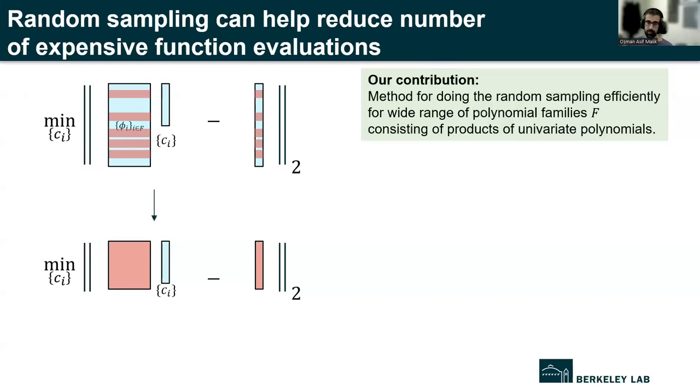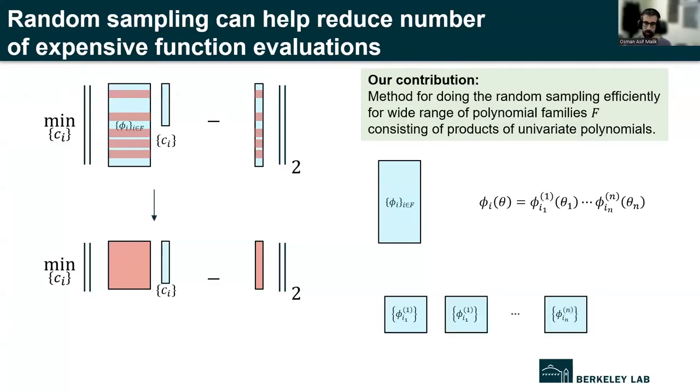I don't have time to go into the details, unfortunately, which are very fascinating, but I want to give you some idea of how this sampling works. So again, this here is the design matrix that we have in the least squares problem, the big original least squares problem. And as I said previously, this is assumed to be a product of univariate polynomials, so that's what we see here. Now, for each of those univariate polynomials, we can also form matrices, but they're a lot smaller than the big matrix that we see a little bit further up. So these are the quantities that we're playing with here.